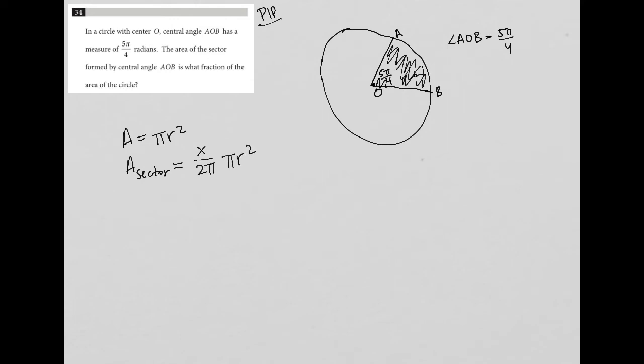So what does this X represent? Well, X represents the central angle. So the area of a sector for us would be (5π/4) / (2π) times πr². In this case, we do not know the value of r, but let's regroup and make sure we understand what the question is asking before continuing with the simplification.